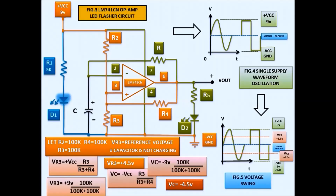Using the formula: Voltage R3 equals reference voltage plus VCC times R3 divided by R3 plus R4, we get positive 4.5 volts. It also swings into the negative input rail because we have two inputs in opposite directions. Using the formula: Negative VCC times R3 divided by R3 plus R4, we get negative 4.5 volts. This is the voltage swing between the positive and negative inputs of the circuit.